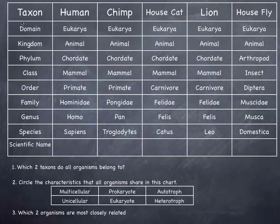Yesterday we talked about binomial nomenclature and how to give things a correct scientific name. We know that humans' scientific name is Homo sapiens. What is something important about how we write it? How do you write a scientific name? There are two important things.